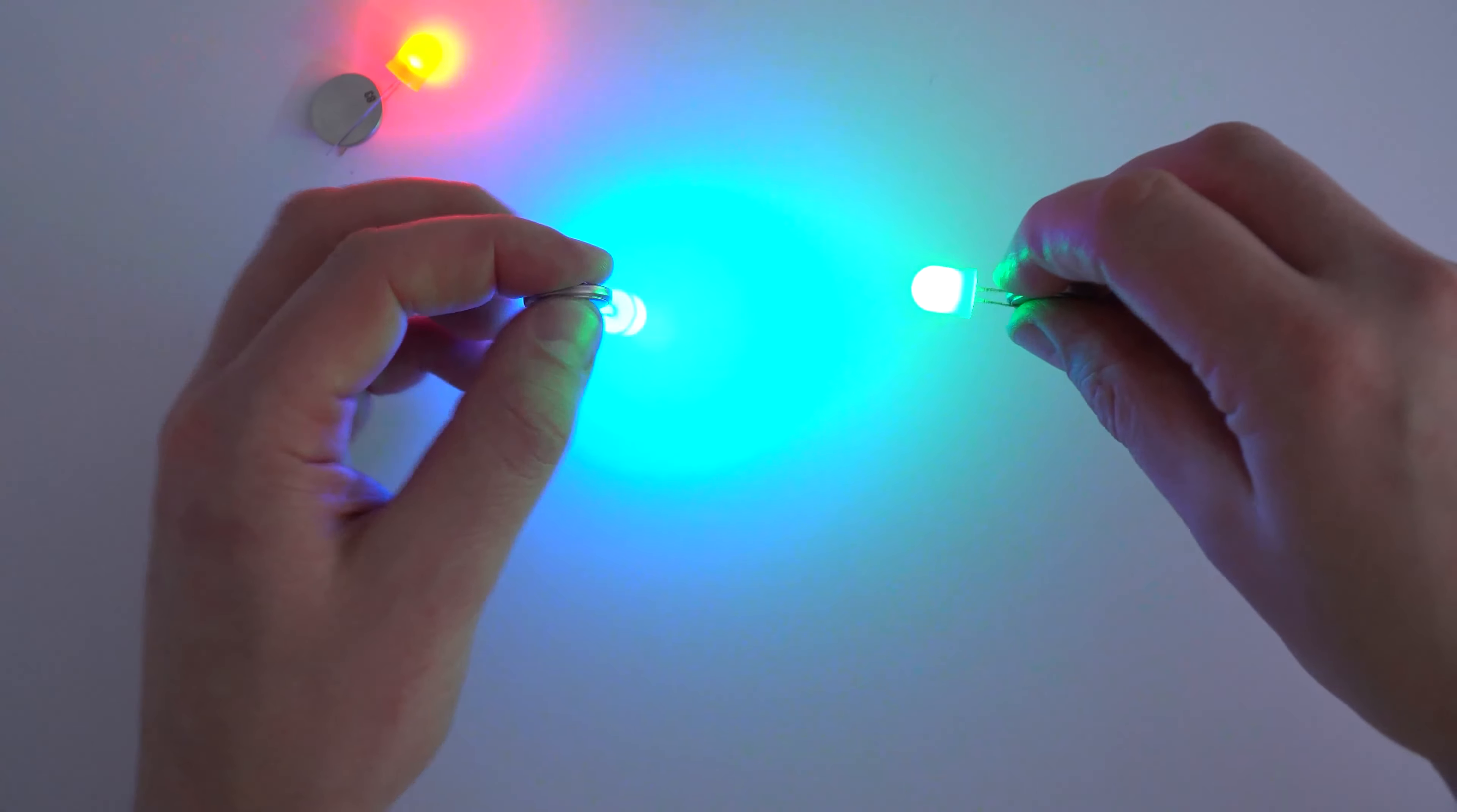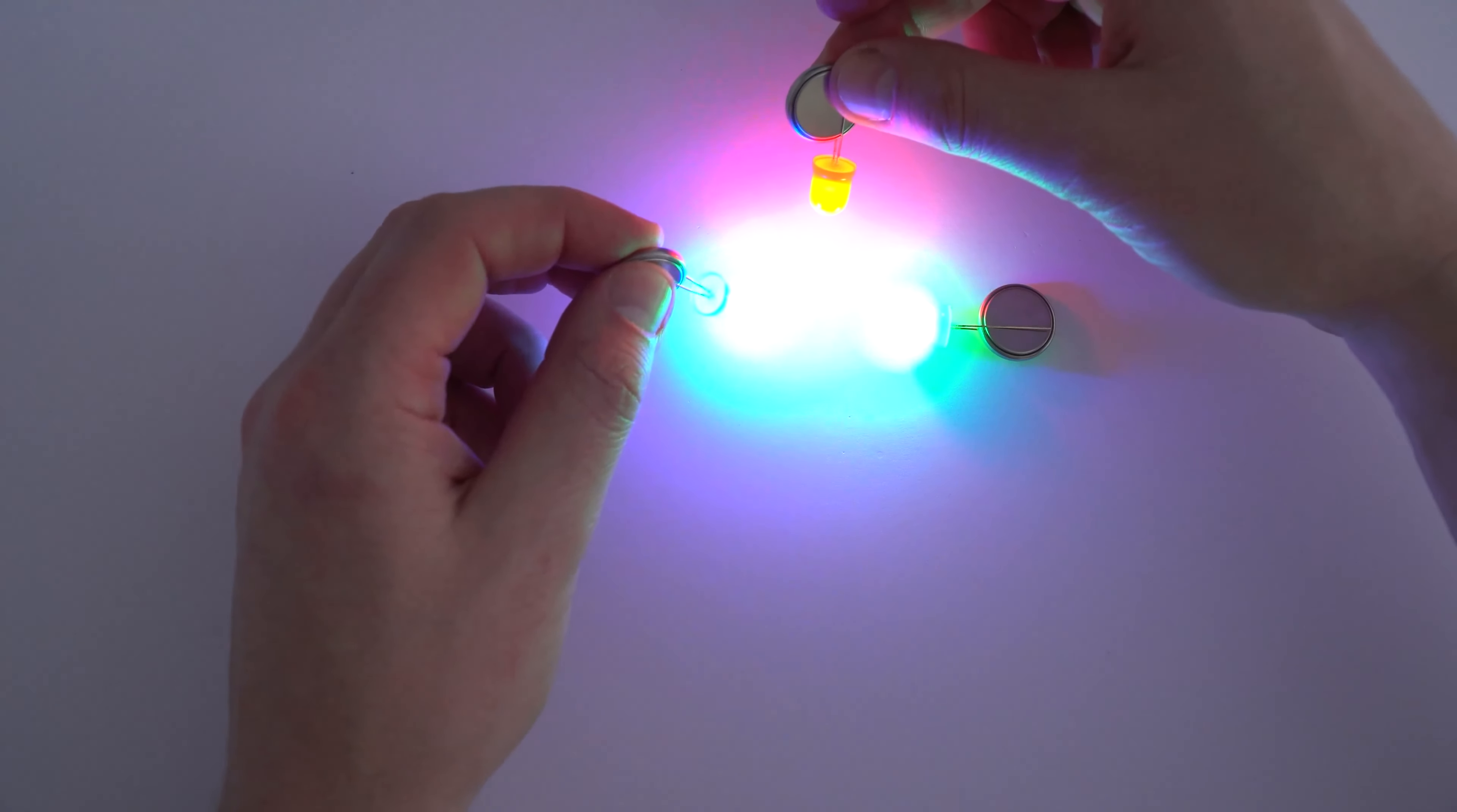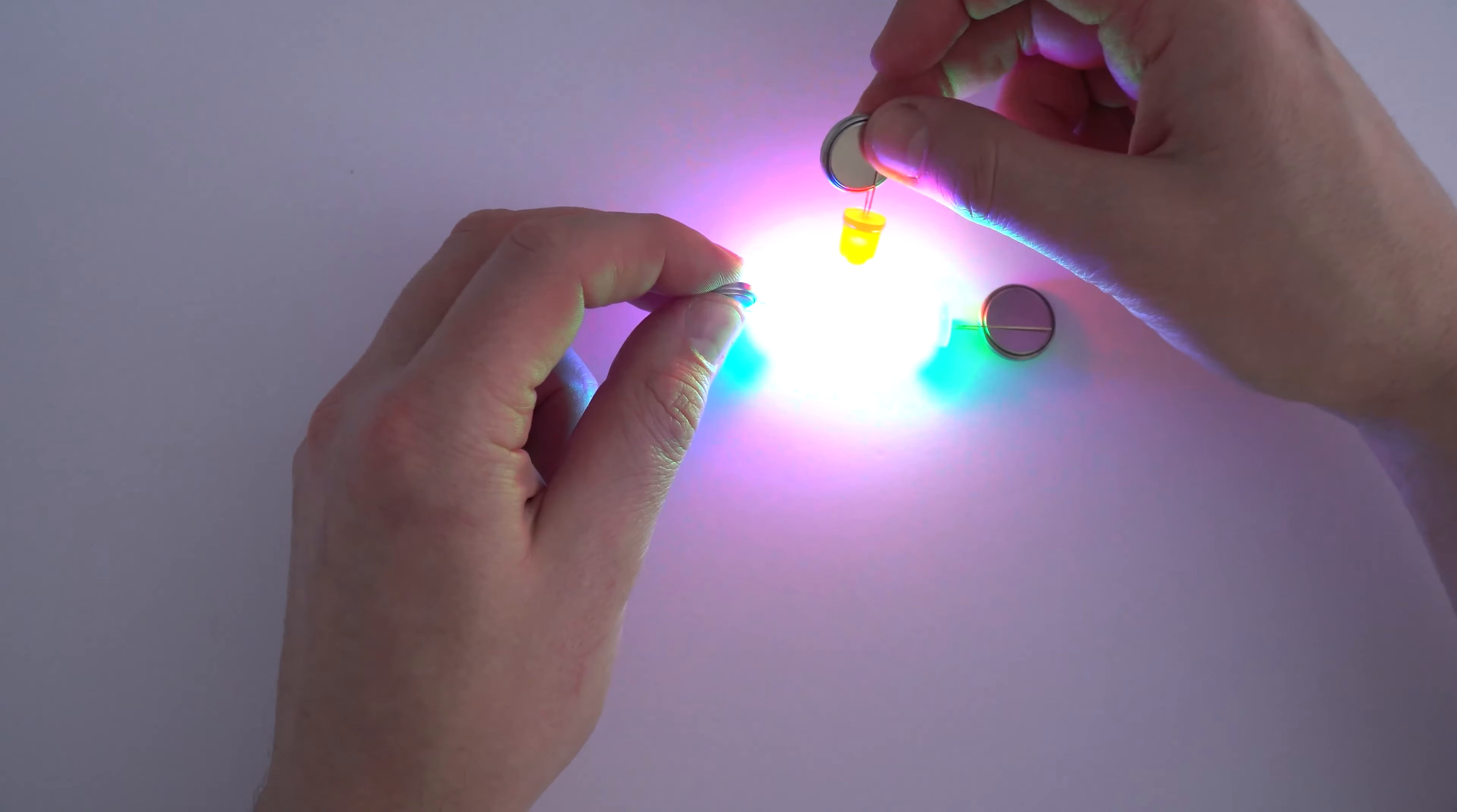So they're the secondary colors of light, and if we were to mix all three of these together what we then see is white light. So the primary colors of light are red, green, and blue, and when we mix the three together we get white light.